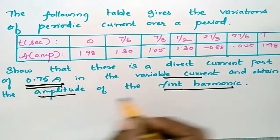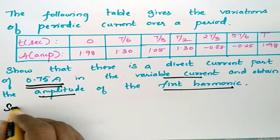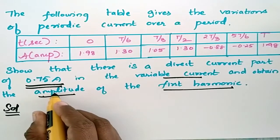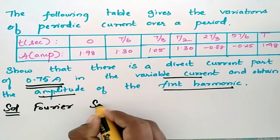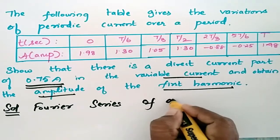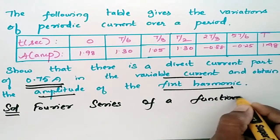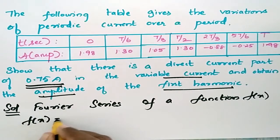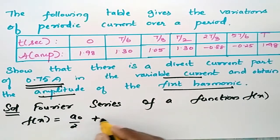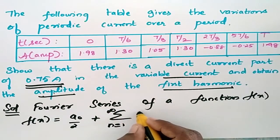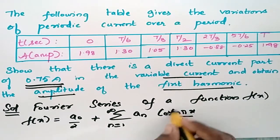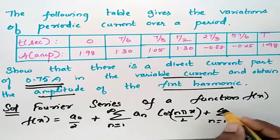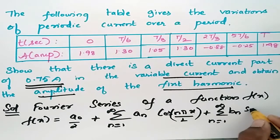In order to obtain the amplitude of the first harmonic, we go for Fourier series. The Fourier series of a function f(x) is equal to a₀/2 plus summation from n = 1 to infinity of aₙ cos(nπx/l), plus summation from n = 1 to infinity of bₙ sin(nπx/l).